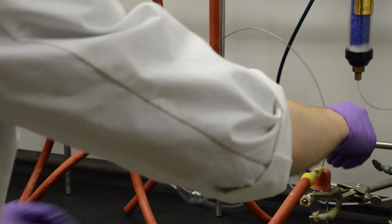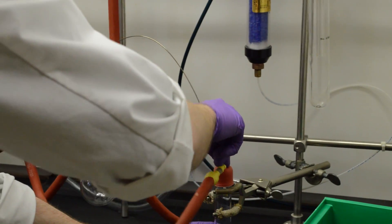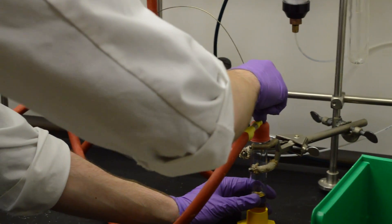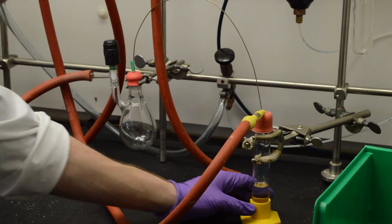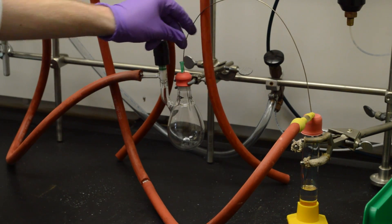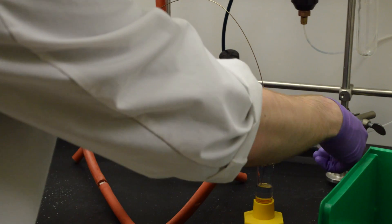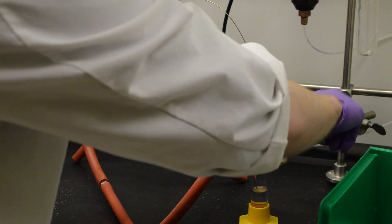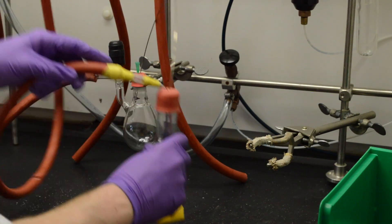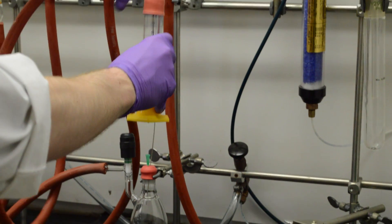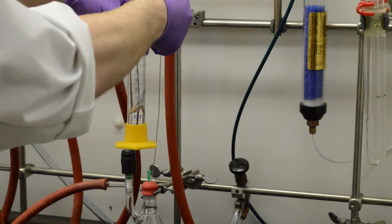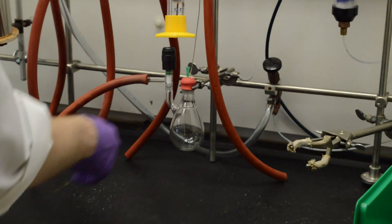So once this is set up, we can slide this end of the cannula down underneath this solution. And a lot of times you won't see this start to pour through right away because the pressure is not particularly strong in these systems. And so if you lift this up, you can actually let gravity sort of help you pour it. And now you can see it coming through into the Schlenk vessel.